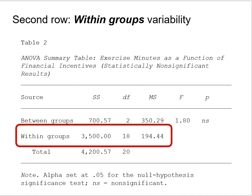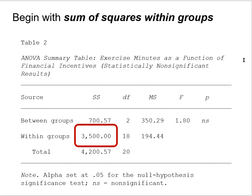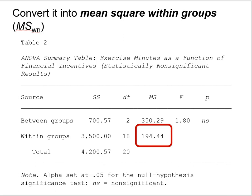That's not the only source of variability in analysis of variance — there's also within groups variability, represented by the second row in the ANOVA summary table. Under 'source' it says 'within groups.' The sum of squares within is 3,500-something, degrees of freedom is 18, and the mean square is 194. You begin with the sum of squares within groups — a very crude measure of variability — and divide it by the degrees of freedom within to convert it into the mean square within groups, the value under MS.